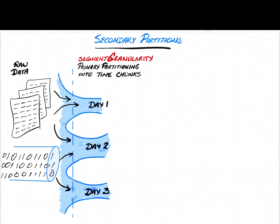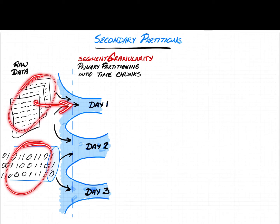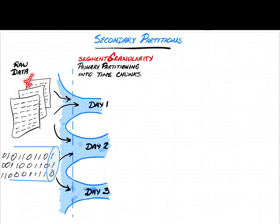To understand secondary partitioning we first need to understand what primary partitioning is. The primary partitioning in Apache Druid is always on time. The ingestion jobs define segment granularity, which defines whether you're subdividing time into days, hours, minutes, seconds, or larger periods like months. The data has a time field that is used to select which time chunk it belongs to, and the same is true for streaming data.